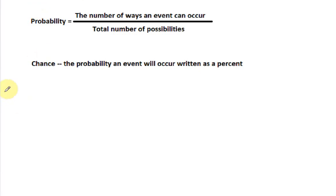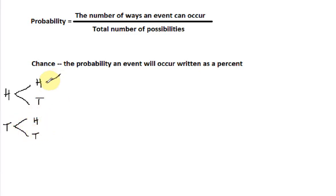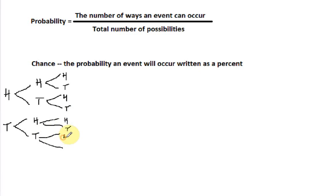On the first flip, we can have a head or a tail. On the second flip, we can also have a head or a tail. On the last flip, it could also be a head or a tail. This tree diagram shows all of my possibilities of flipping a coin three times — I could have head-head-head, head-head-tail, head-tail-head, head-tail-tail, and so on. In the last column, there are eight different possibilities.